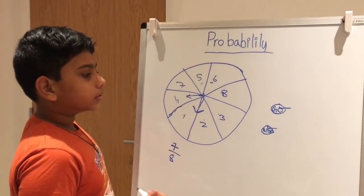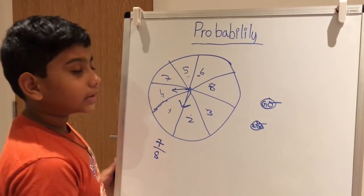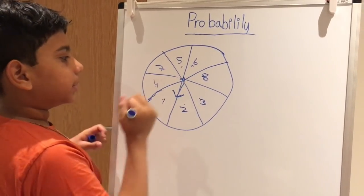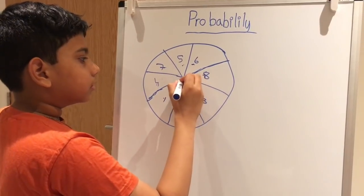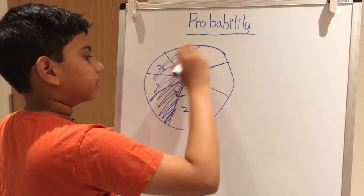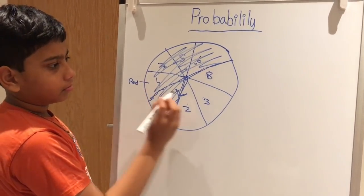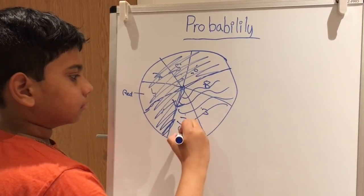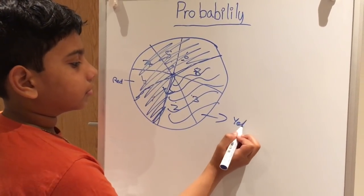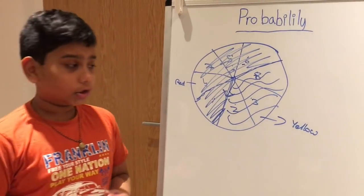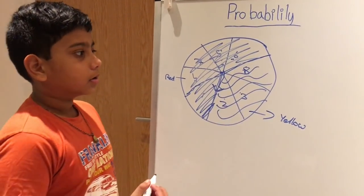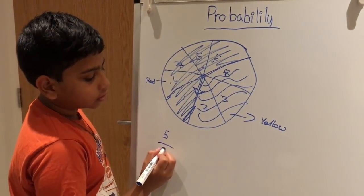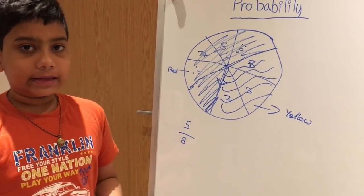Now let's try another type of spinner using colors. In this spinner, a large portion is red and some is yellow. When asked what the probability is to get red, you count how many slices are red: one, two, three, four, five. So five out of eight slices are red. The probability to get red is five over eight, which is likely.